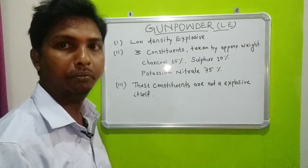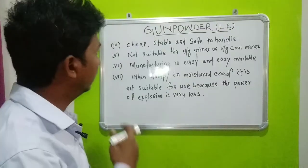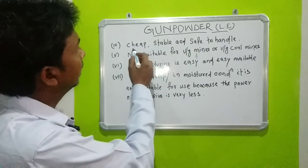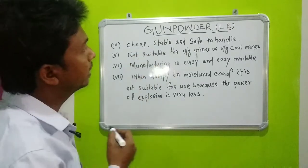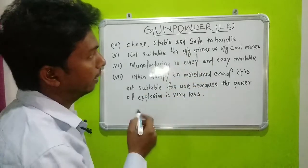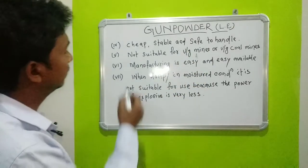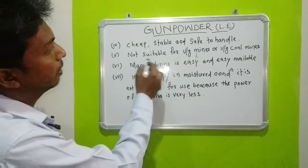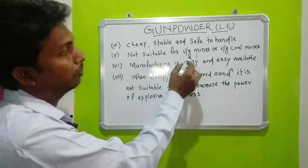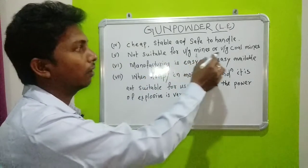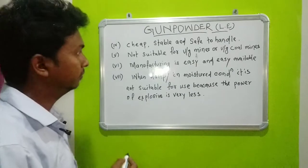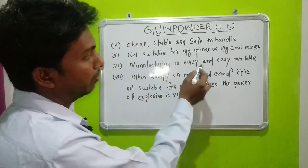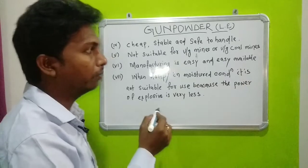These constituents are not explosive by themselves. Gunpowder is very cheap, stable, and safe to handle. It is not suitable for underground mines or underground coal mines. Its manufacturing is also very easy and it is easily available from suppliers.